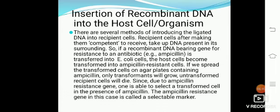If the transformed cells are spread on agar plates — agar being a white powder-like substance obtained from the alga Gelidium — bearing ampicillin, only transformants grow while untransformed recipient cells die. Therefore, due to the ampicillin resistance gene, one is able to select transformed cells. These resistance genes are called selectable markers, used to detect transformants from untransformants.